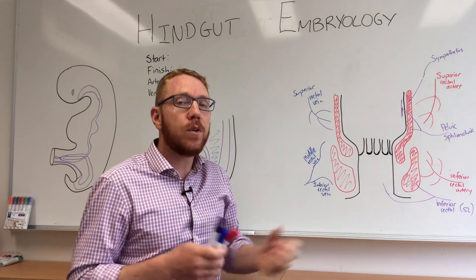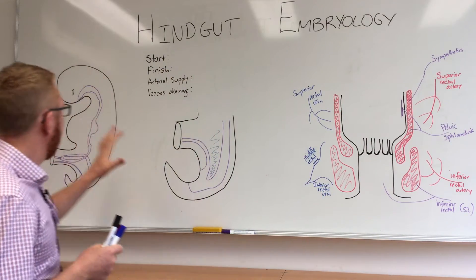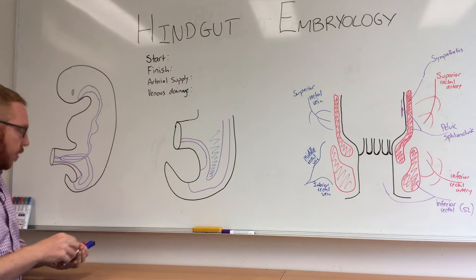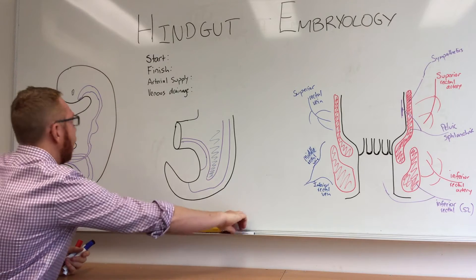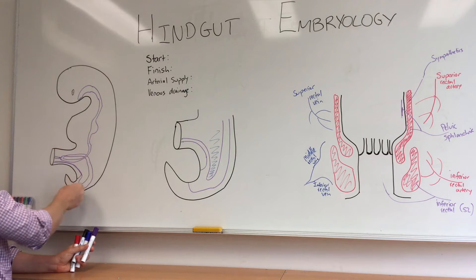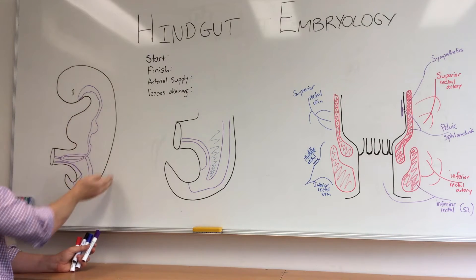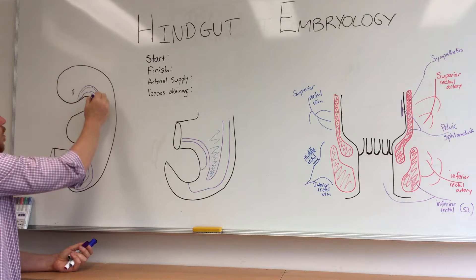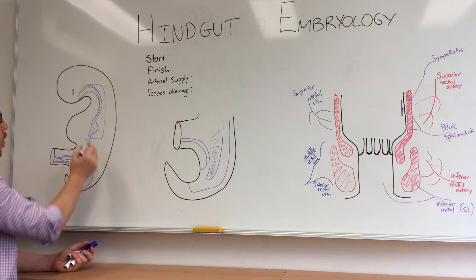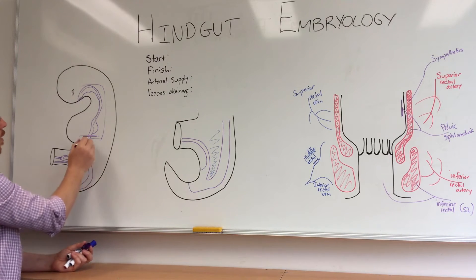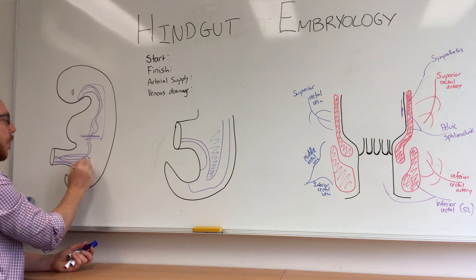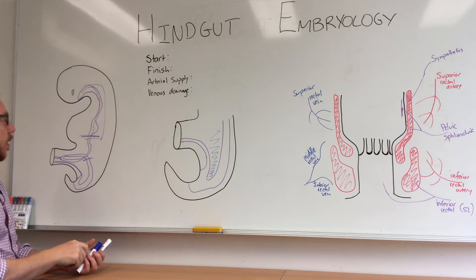Looking at this picture, we've covered the gut tube several times. You can see the purple tube running throughout — the head end here, the connecting stalk at the tail end, dorsal and ventral aspects. We've done the foregut structures at the top end, with the demarcation point essentially being part of the duodenum, then into the midgut with the rotations, and now we're ending with the hindgut.